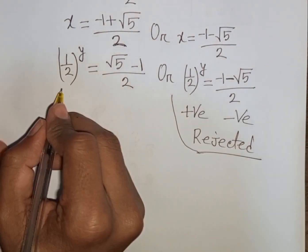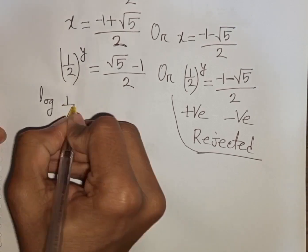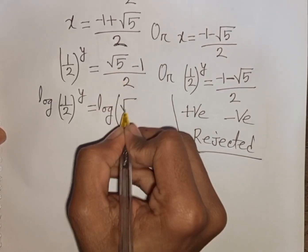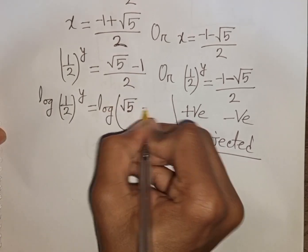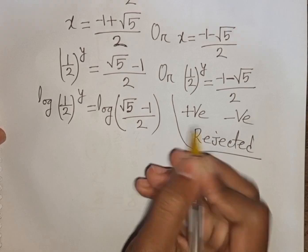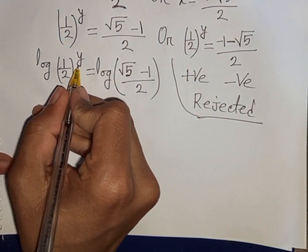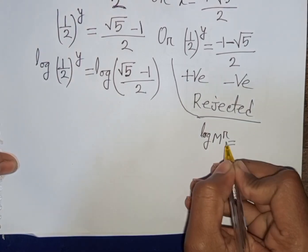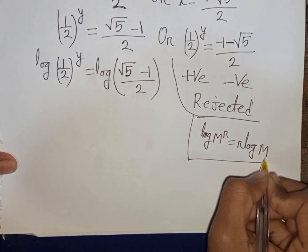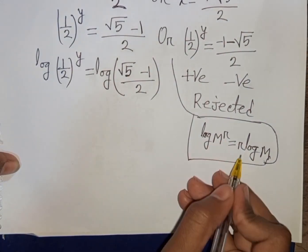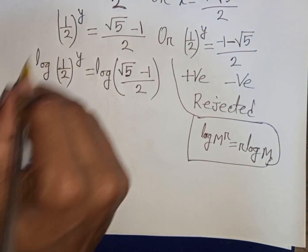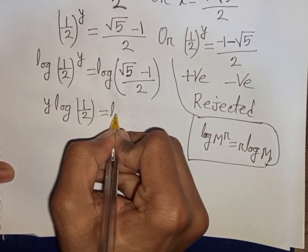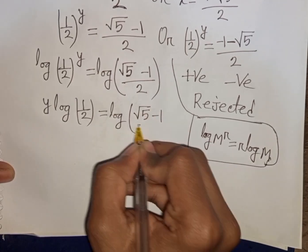From the remaining equation we apply log to both sides: log of (1 over 2) power y equals log of (square root of 5 minus 1) over 2. Using the rule log m power r equals r log m, the power y moves to the front: y log(1 over 2) equals log((square root of 5 minus 1) over 2).